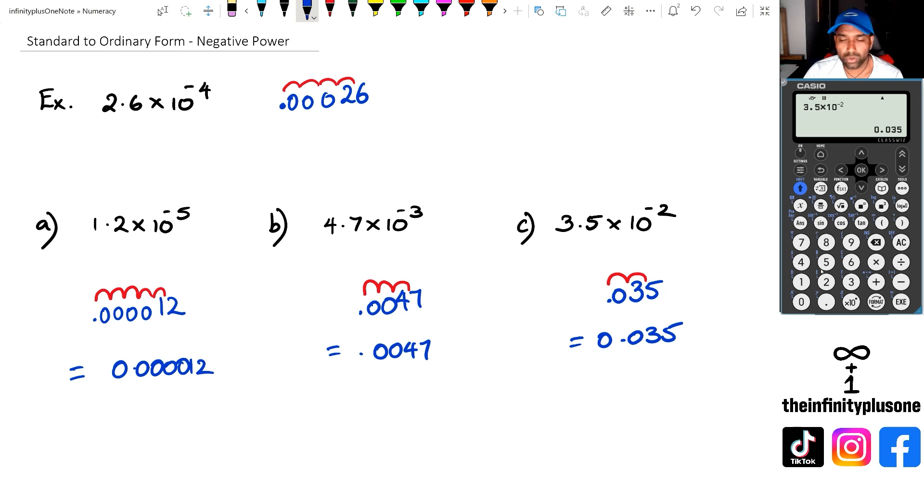So that is basically a quick summary for standard to ordinary form, particularly looking with negative powers. Now as I said in the previous videos in this series, just always remember this: if you have a number times 10 to the power of a positive number, then usually your final number should be quite big. So it's like a large number will have a positive power for the 10. But if you have a negative power for the 10, then you're going to get an extremely small number. So that's just something for you to kind of do it like a quick check, just to see if you've actually done going from standard to ordinary form or the other way correctly.